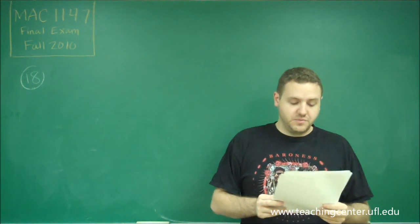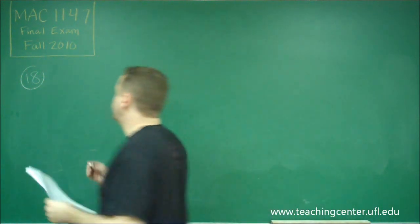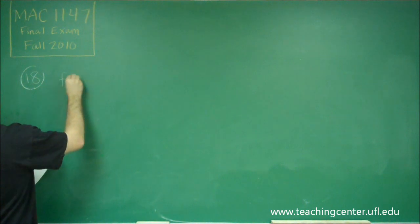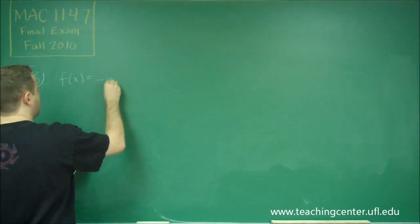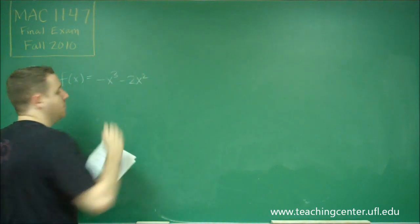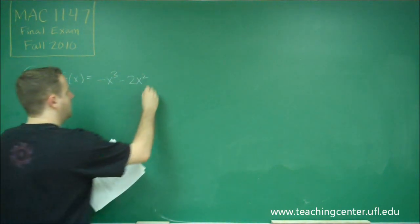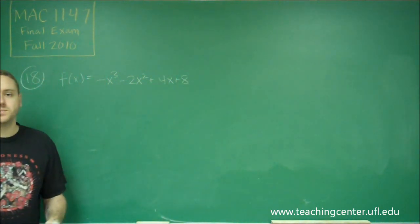For number 18, we're asked a few different things about a polynomial of degree 3. Let's start out with our polynomial. We have f(x) is equal to negative x cubed minus 2x squared plus 4x plus 8.